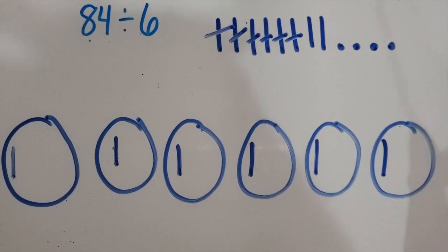Then I would ask students: what could we do with what we have left so that each group gets an equal amount? The goal is that you want students to remember that tens can be regrouped as ten ones.